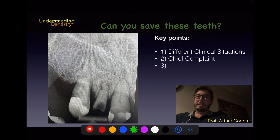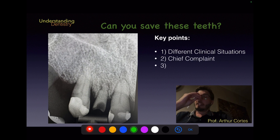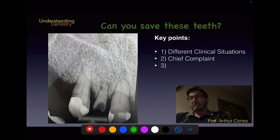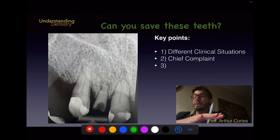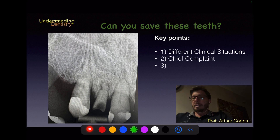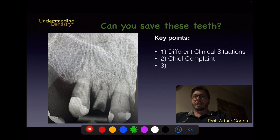The chief complaint is critical — the second key point today. We need to ask where the patient has pain and whether they have discomfort when biting. There are no posterior teeth visible here. Posterior teeth should protect anterior teeth, so before restoring anteriors, treatment should follow this sequence: periodontal treatment, extractions, posterior rehabilitation, then anterior restorations.